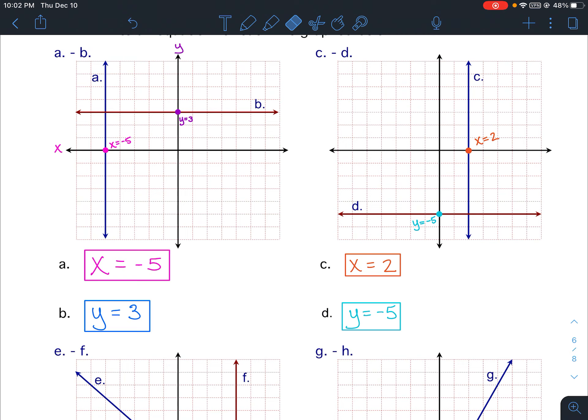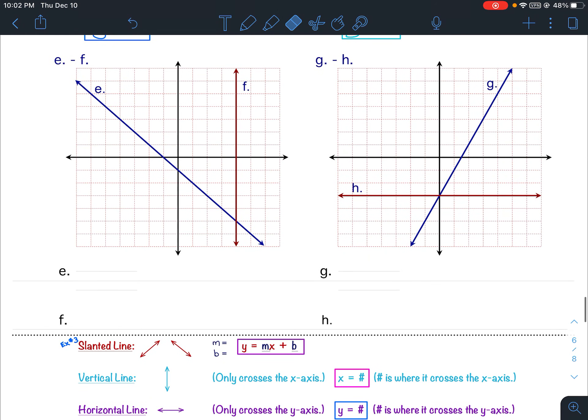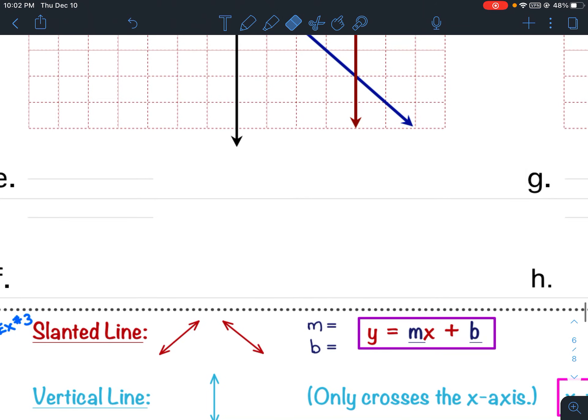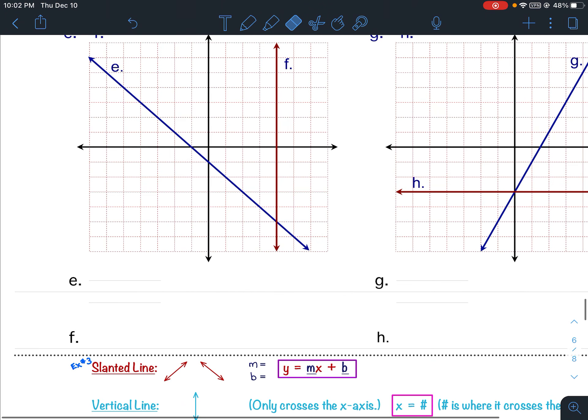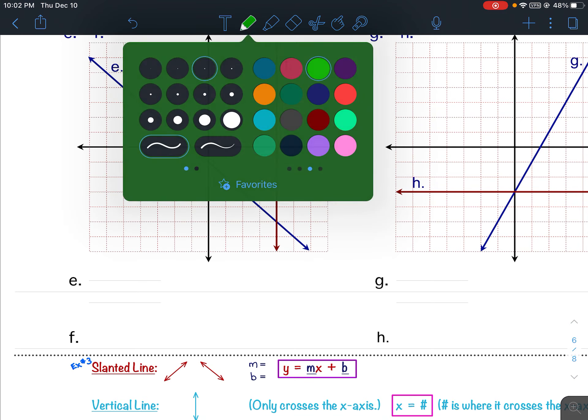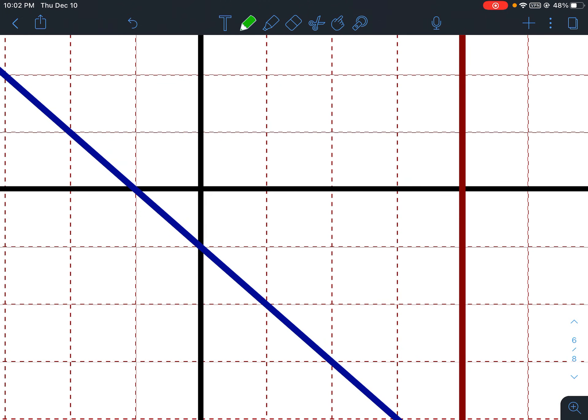Alright, so now let's move on to E and F. Now E is a slanted line. So now we're back to what we had to do in example 3. E is a slanted line. So for slanted lines, we have to find m and b. So let's start with the y-intercept. b is the y-intercept. Where does E cross the y-axis? Well, it crosses the y-axis at this point right here. So that is our b. b equals, it goes down 1. So b is negative 1.